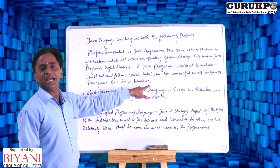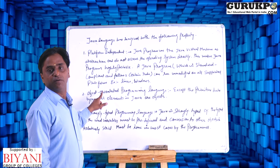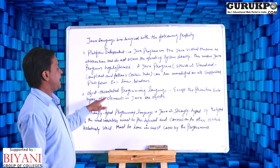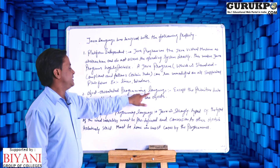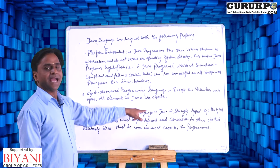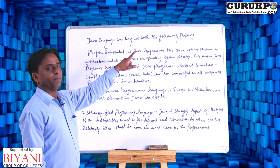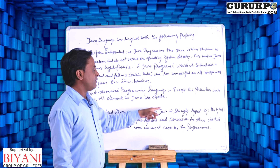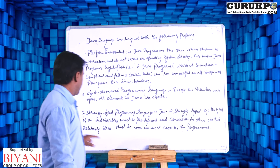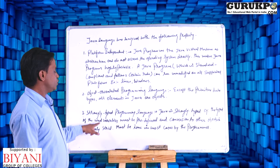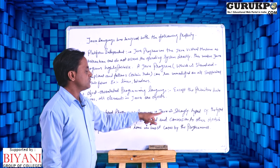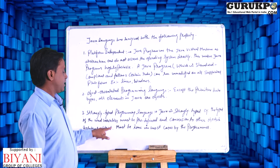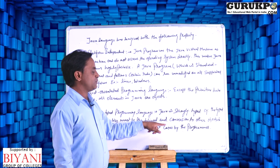Next, object-oriented programming language — this is also a property of Java. Except for the primitive data types, all elements in Java are objects. Next is strongly typed programming language, also a property of Java. In a strongly typed programming language, the type of every variable must be predefined, and conversions to other types are, in most cases, strict and must be done explicitly by the programmer.